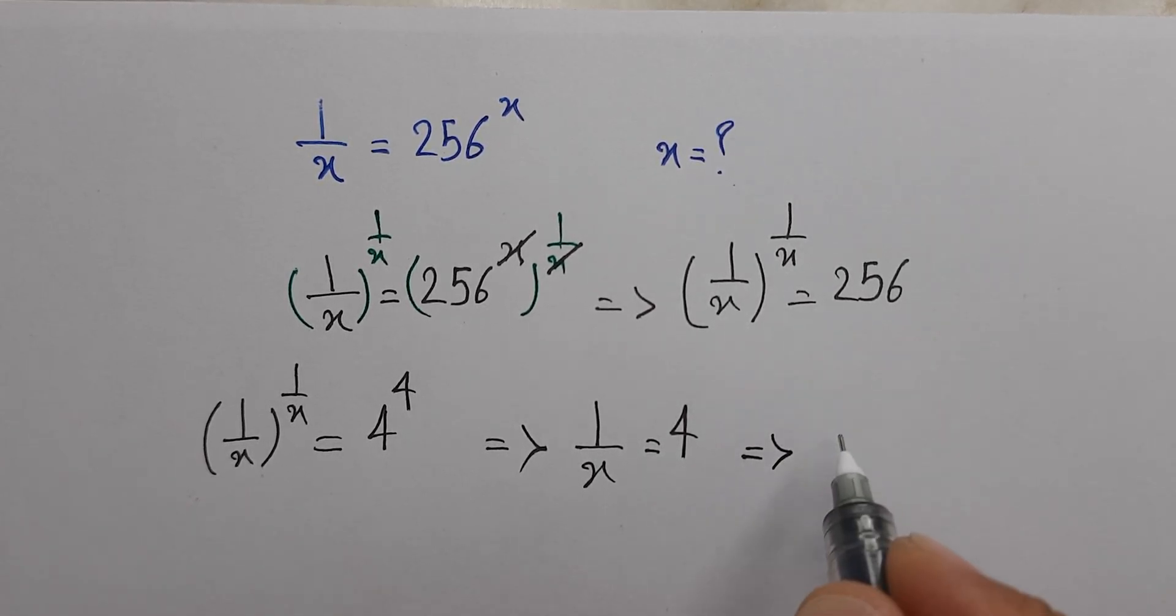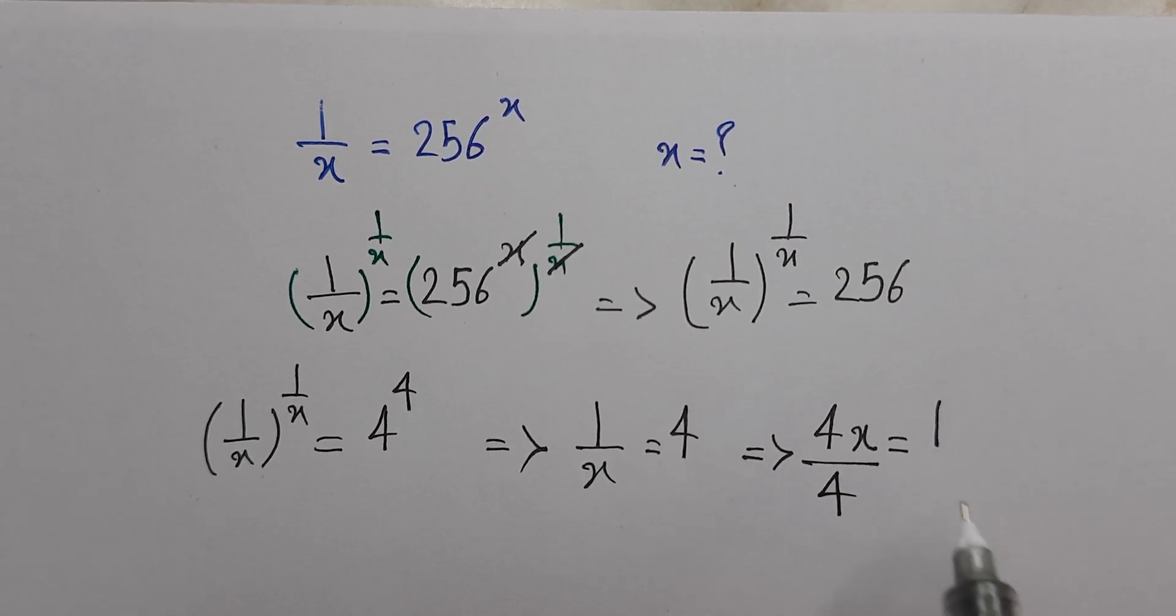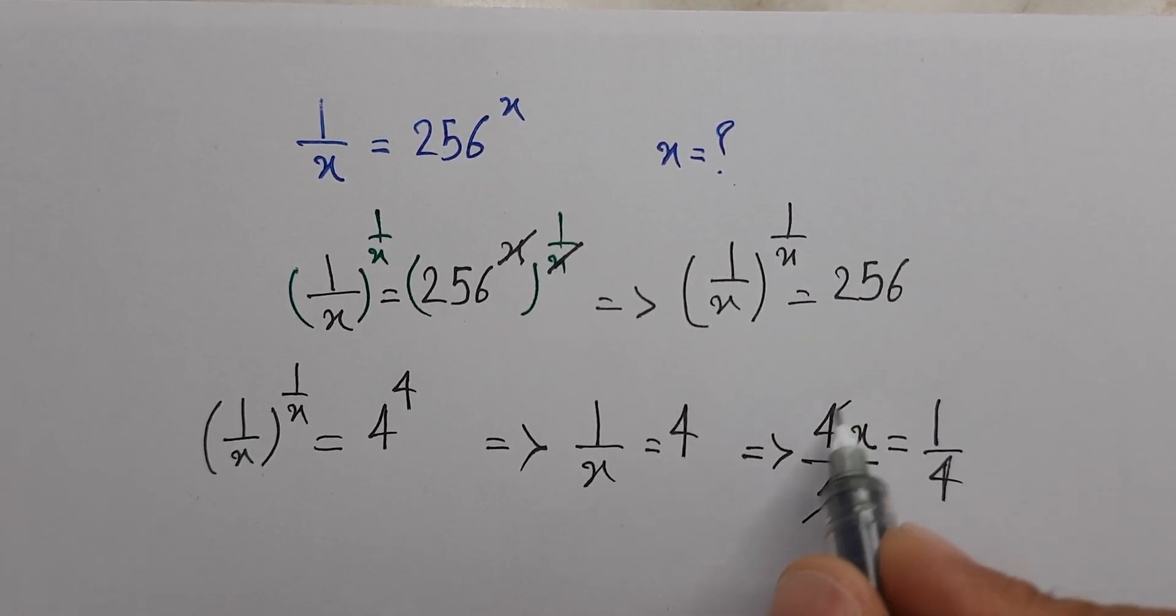Now we have 4x is equal to 1. We can divide both sides by 4, we can cancel out 4 here.